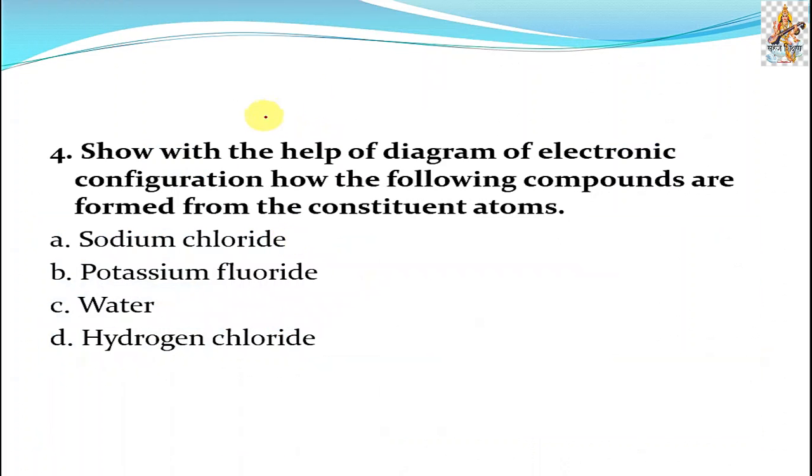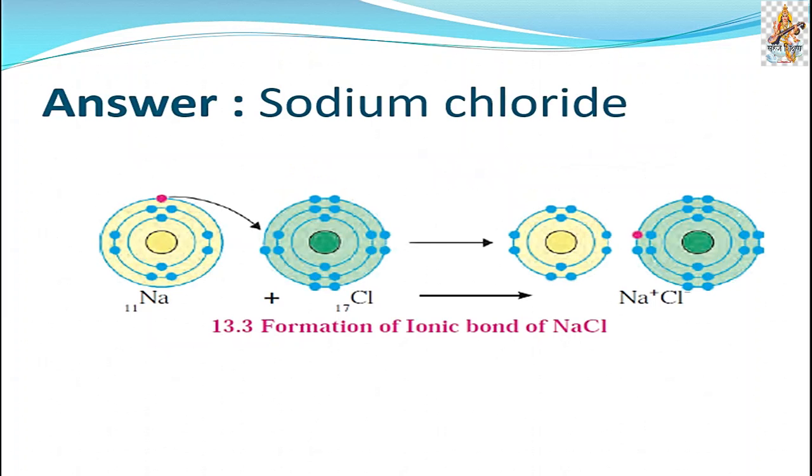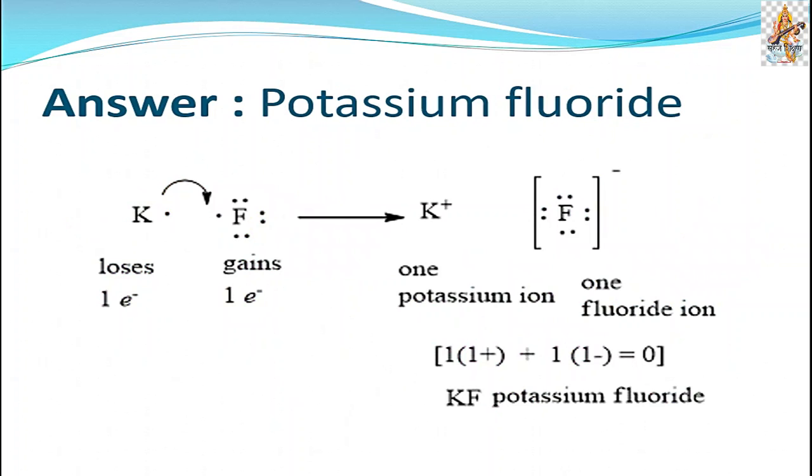Question number four: Show with the help of diagram of electronic configuration how the following compounds are formed from the constituent atoms. First is sodium chloride. This diagram is already given in our textbook how sodium chloride is formed. Electron is shared between, excessive electron is shared to chlorine to form its configuration complete. So it is formed NaCl. Here the ion goes here and it is formed, completed its position. Similarly potassium fluoride: potassium has excessive electron, it will give to fluorine and form the potassium fluoride.